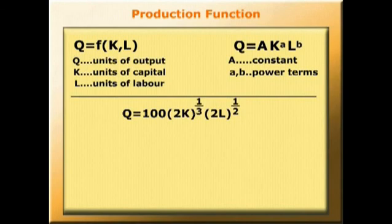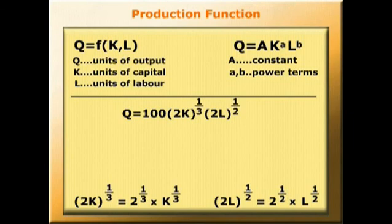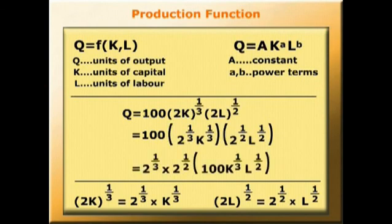So now we have Q equals 100 times 2K to the third times 2L to the half. Now, by the rule of logs, 2K to the third is equal to 2 to the third times K to the third. So we can substitute and say that Q equals 100 times, open bracket, 2 to the third times K to the third, close bracket, times, open bracket, 2 to the half times L to the half, close bracket. Which gives us 2 to the third times 2 to the half, multiplied by the bracket 100 times K to the third times L to the half.